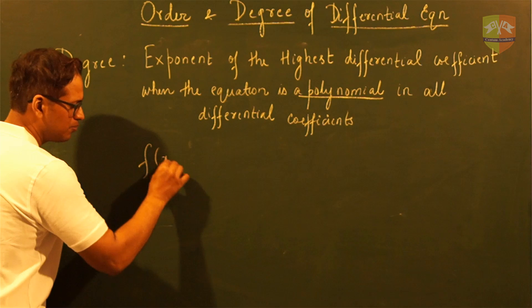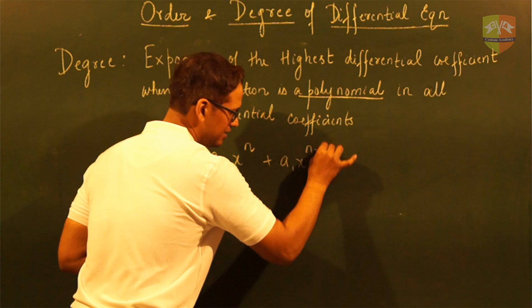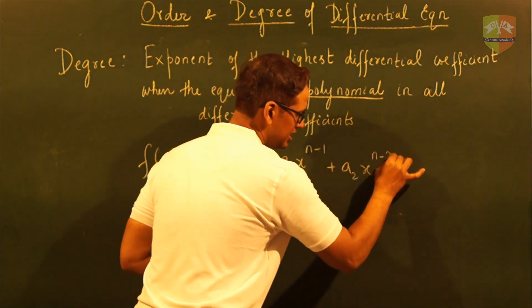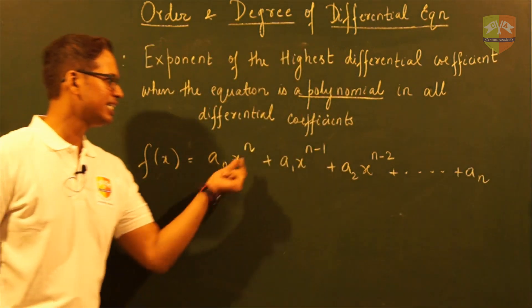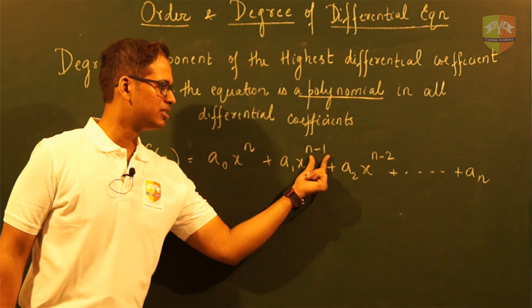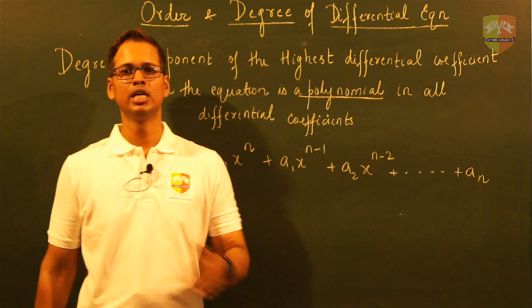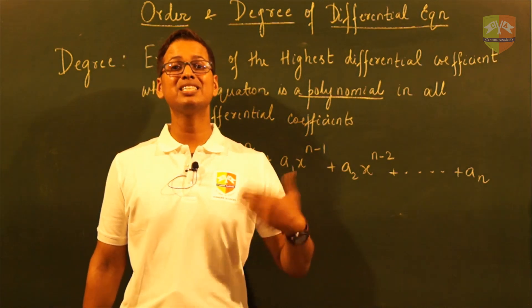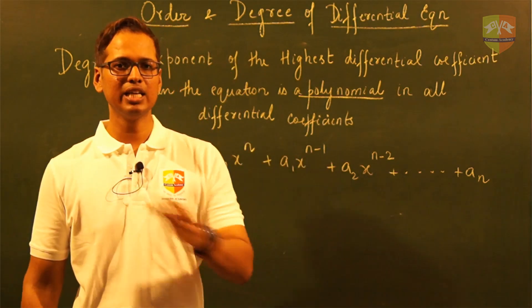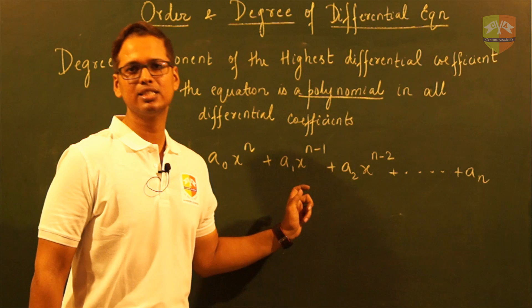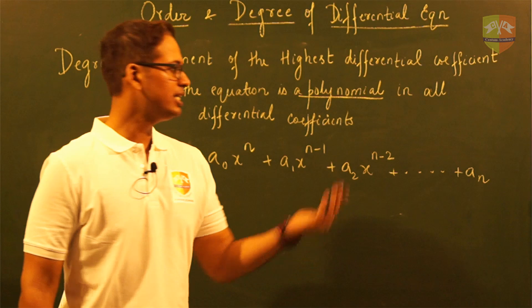A polynomial function is something where you have terms of this nature. One thing that must be kept in mind is that the powers of these variables should be whole numbers. That means none of the powers should be fractions and none of the powers should be negative integers — they must be whole numbers. Zero is acceptable, natural numbers are acceptable, but none of the powers on the variables must be fractions or negative integers.